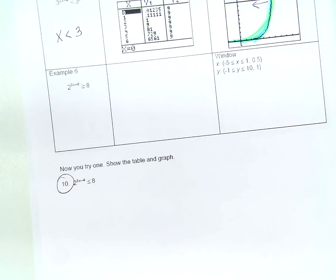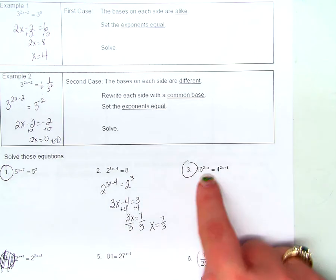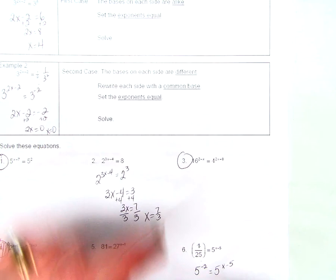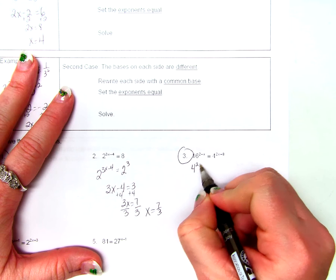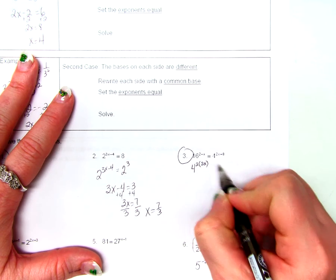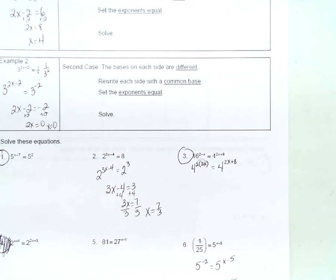On number 3, they both have a variable in there — how would you handle that? Same way. When you get 4 to the something equals 16, and 16 is 4 squared, you'd have 4 squared to the 2 minus x. You'd have to distribute that into the exponent — it is a multiplier. Very good question.